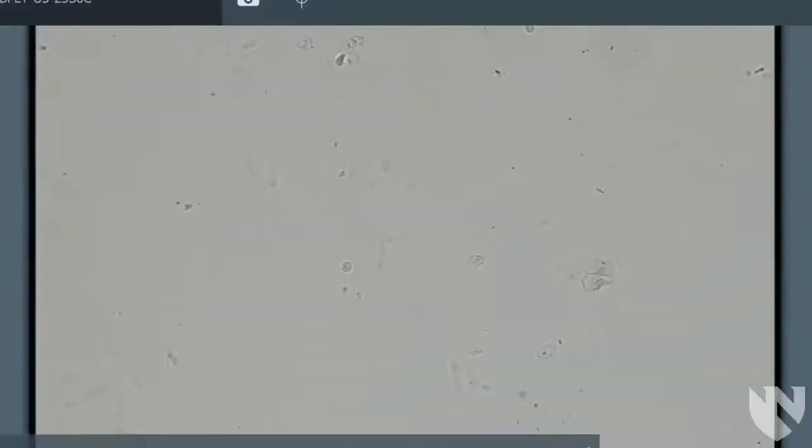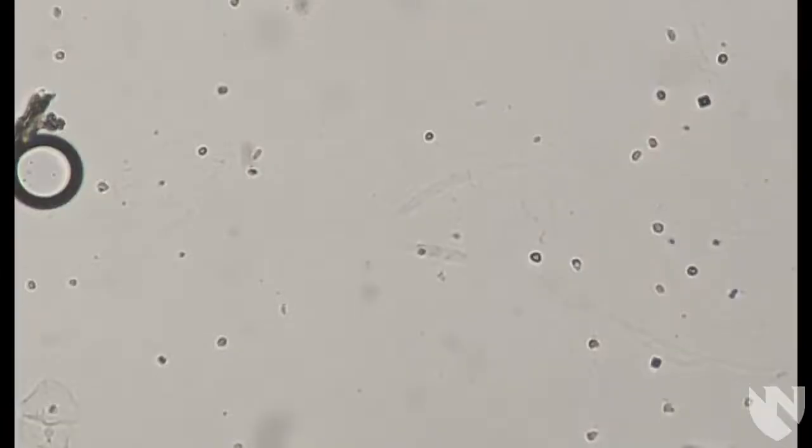While on the 10x objective, we will enumerate any squamous epithelial cells, casts, and mucus we see. Begin by scanning the perimeter of the slide and scan a minimum of 10 to 12 fields.